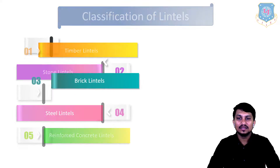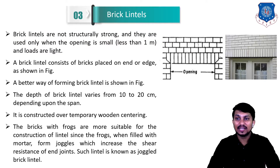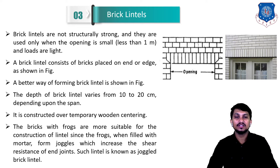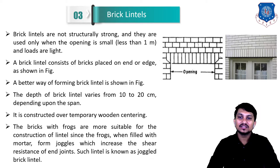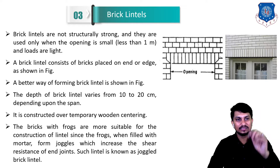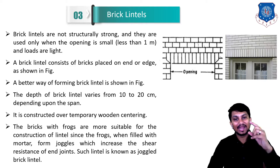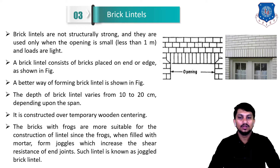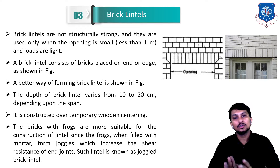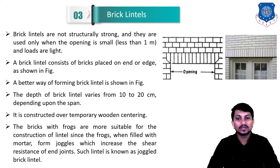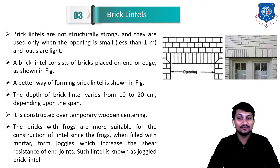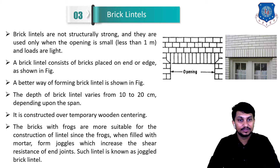Brick lintels are not structurally strong and are used only when the opening is small — less than one meter — and loads are comparatively light. A brick lintel consists of bricks placed on end or edge. The depth of brick lintels varies from 10 to 20 centimeters depending on the span. It is constructed over temporary wooden centering. Bricks with frogs are more suitable; the frogs, when filled with mortar, form joggles which increase the shear resistance of end joints — this is known as a joggled brick lintel.